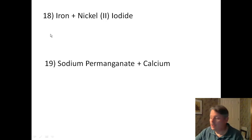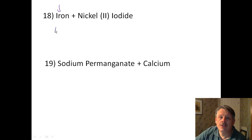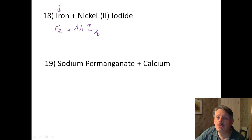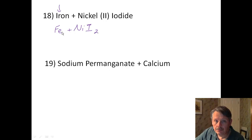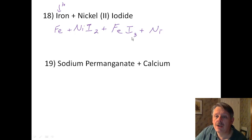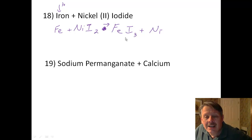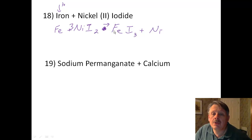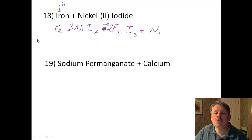Number 18: iron and nickel(II) iodide. Iron is higher than nickel on the activity series, so it replaces nickel. Nickel is 2+, iodide is 1−, so I need 2 iodines when I crisscross. Iron is typically 3+, so I get FeI₃ plus Ni. We have 3 iodines on the right and 2 on the left, so I put a 3 in front of nickel iodide and a 2 in front of iron iodide to give 6 iodines on both sides. Then I balance with 2 irons and 3 nickels.